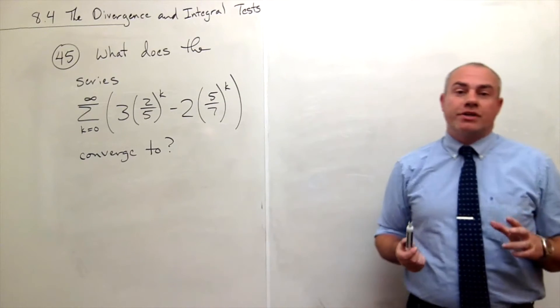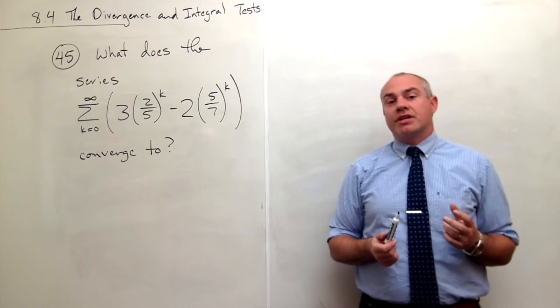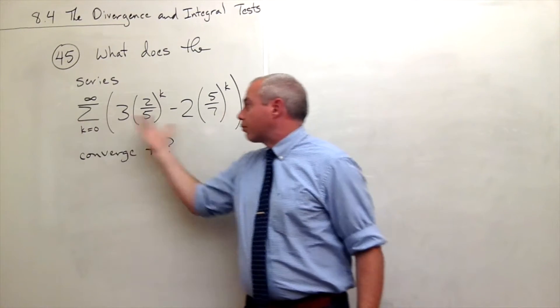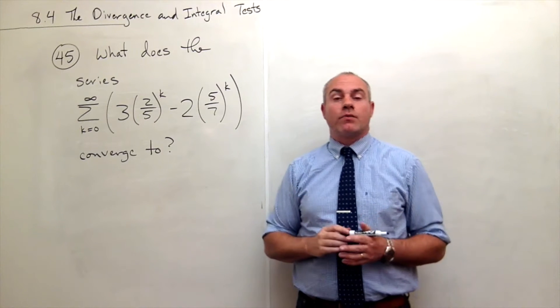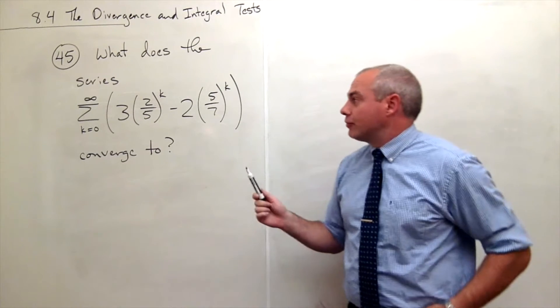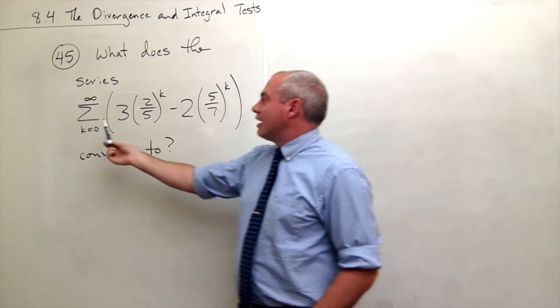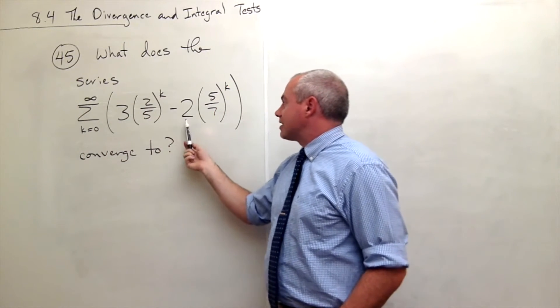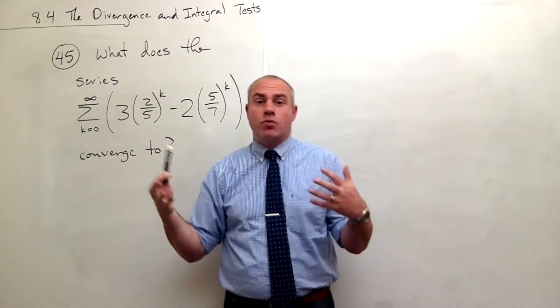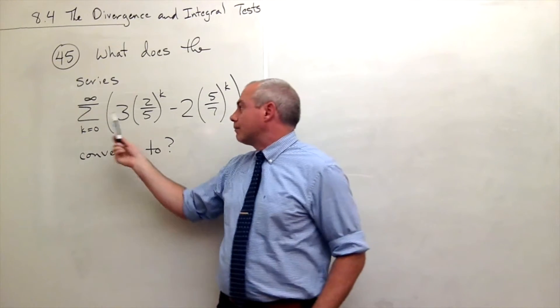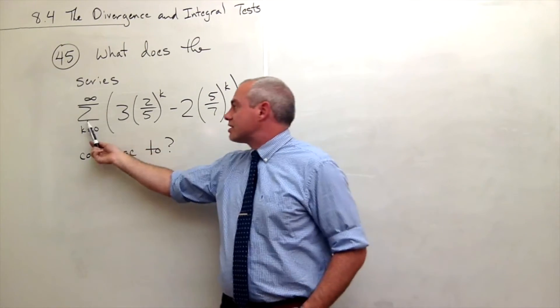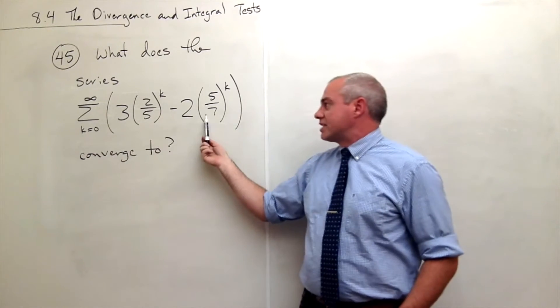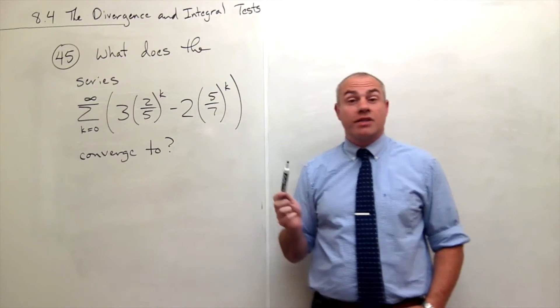And so what I want to do here is I want to use some properties of summations to break this thing down into something I can work with a little easier. So what I'm going to do is I'm going to recognize that I have the sum of something minus something. So this is all just one big sum, so I can break this into two sums, the sum of the first thing plus the sum of the second thing. So let's do that first.